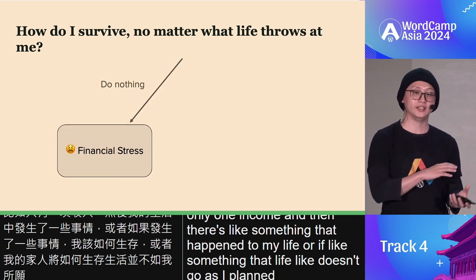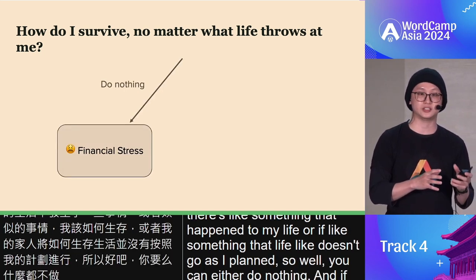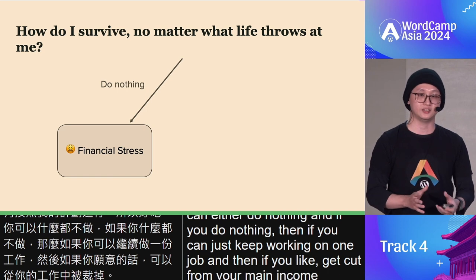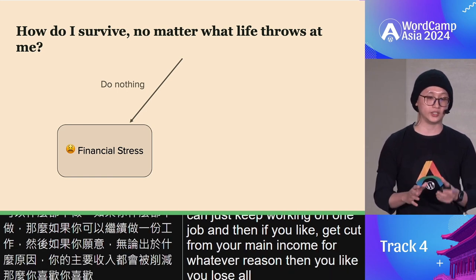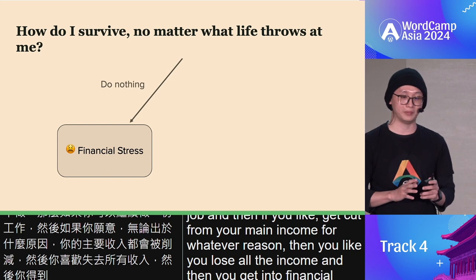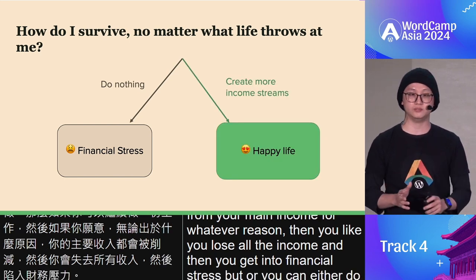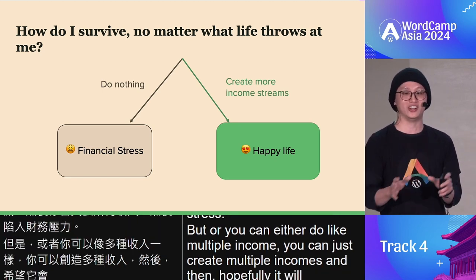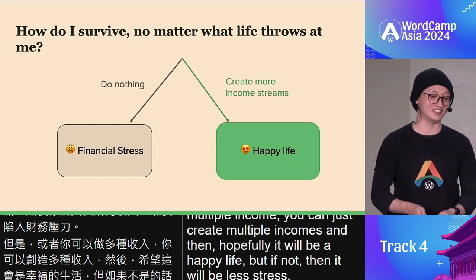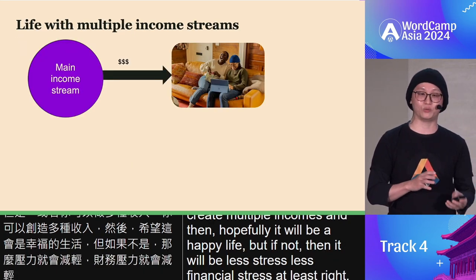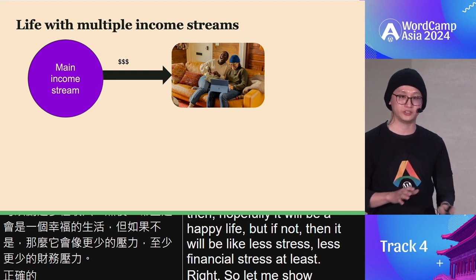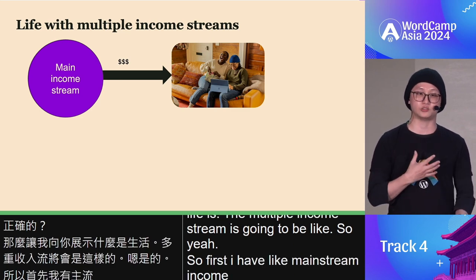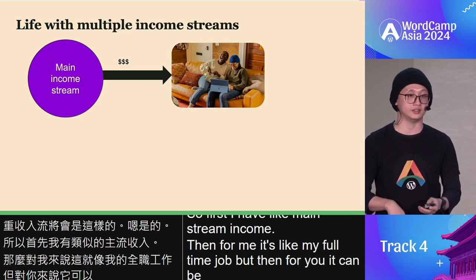You can either do nothing — keep working one job — and if that income gets cut, you lose everything and face financial stress. Or you can create multiple incomes. Hopefully it leads to a happy life, but at the very least it means less financial stress. So let me show you what life with multiple income streams looks like. First there's your mainstream income — for me it's my full-time job, but it could be freelance or something else.